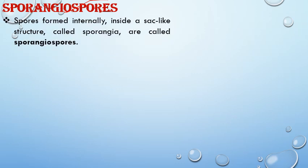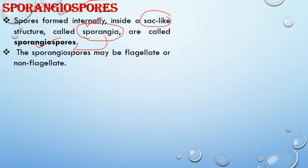Next are sporangiospores, which are spores produced inside a special sac-like structure known as sporangia. The sporangia are produced on a stalk-like structure known as sporangiophore. Sporangiospores may be flagellated or non-flagellated — they may be zoospores or aplanospores. Flagellated spores are known as zoospores, and non-flagellated spores are known as aplanospores.